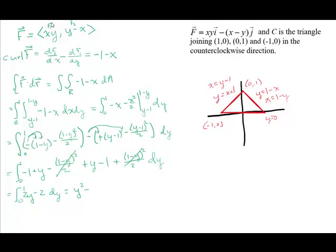So we're going to end up with y² - 2y from 0 to 1. We can plug in the 1. We're going to get 1² - 2(1). If we plug in the 0, we're going to get 0. And that's going to give us 1 - 2 or -1.